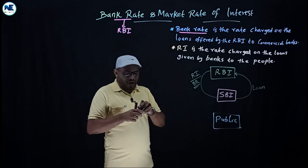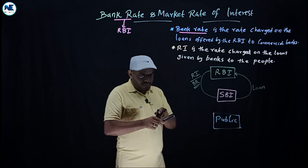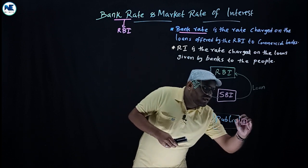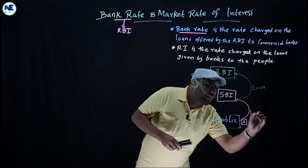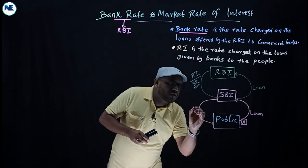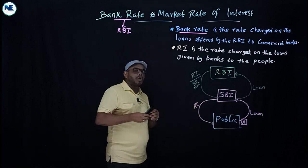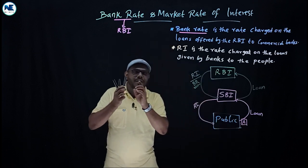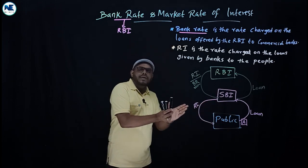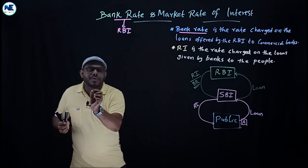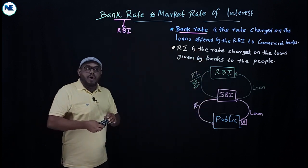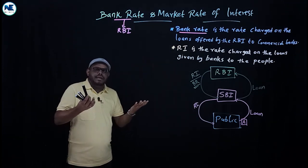Similarly, suppose a farmer or member of the public takes a loan from SBI. SBI will impose a rate of interest on that loan given to the public. This rate of interest that a commercial bank charges on loans given to the general public is the market rate of interest.